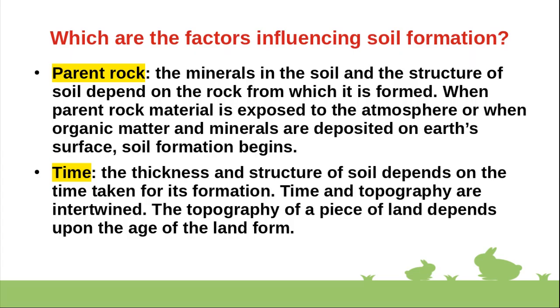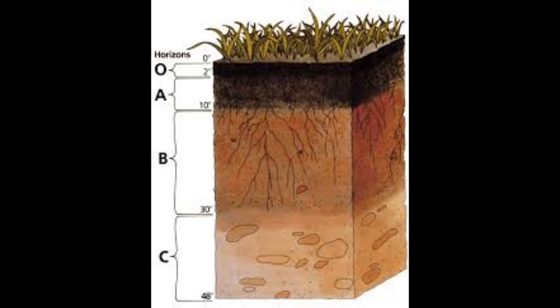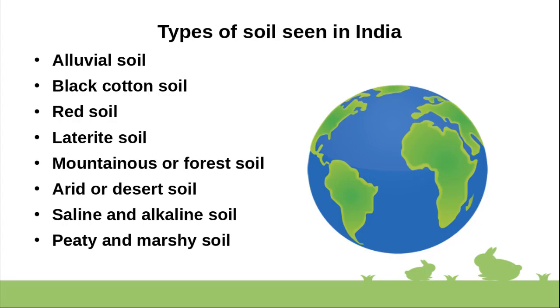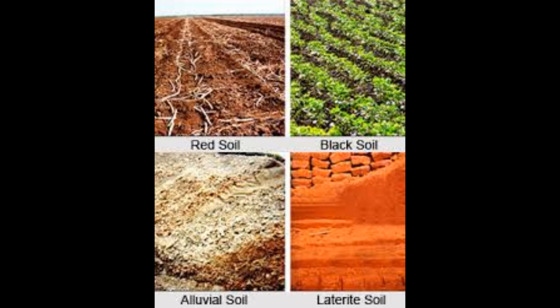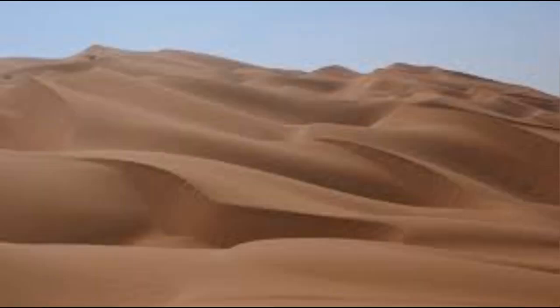The fifth factor is time. The thickness and structure of soil depend on the time taken for its formation. The topography of a piece of land depends upon the age of the landform. The important soil types seen in India are alluvial soil, black cotton soil, red soil, laterite soil, mountainous or forest soil, desert soil, saline and alkaline soil, and marshy soil.